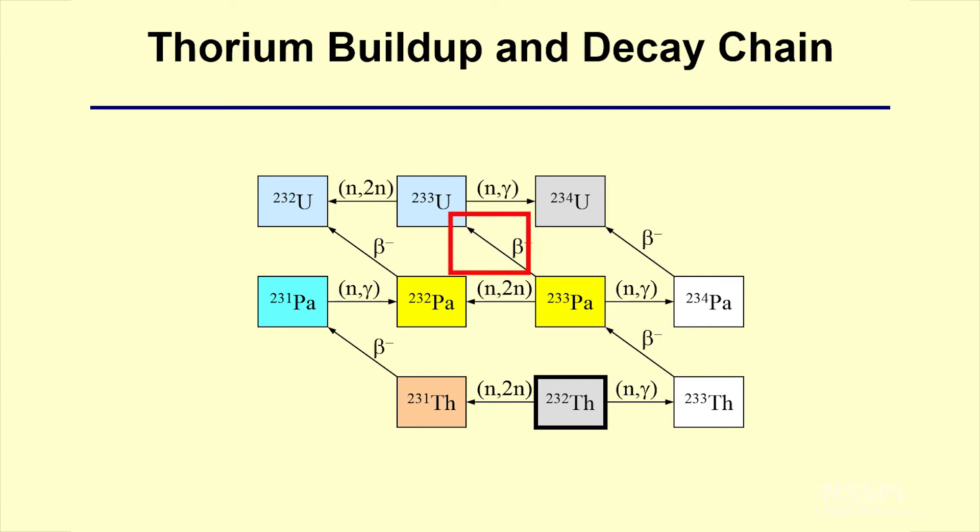Uranium-233 is a good nuclear fuel like U-235, so when that exists in a reactor, it'll predominantly fission in the reactor and produce power. This particular buildup and decay chain really only occurs in India.